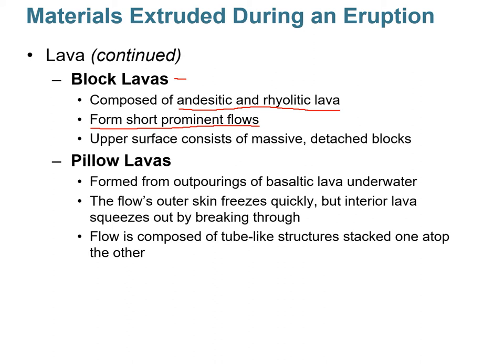Another type of material extruded during eruptions is pillow lava. These are outpourings of basalt under water, typically under the ocean. Flowing basalt hits seawater at about 2–3 degrees Celsius, which instantaneously freezes the outside of the lava. The inside is still hot and mobile, so it breaks through and squeezes through the exterior skin, forming tube-like structures — that's why they're called pillow lavas.